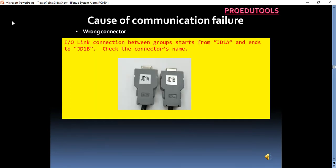Wrong connector. IO-link connection between groups starts from JD1A and ends to JD1B. Check the connector's name.